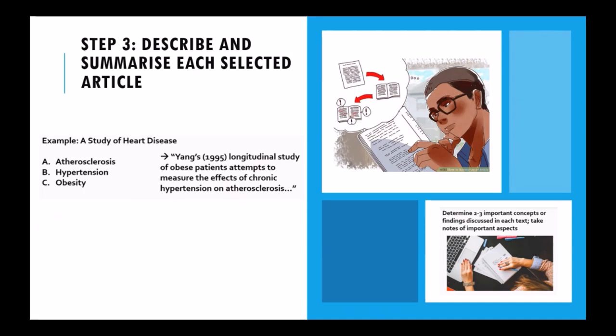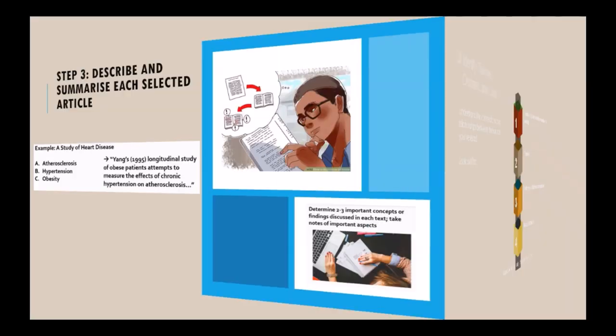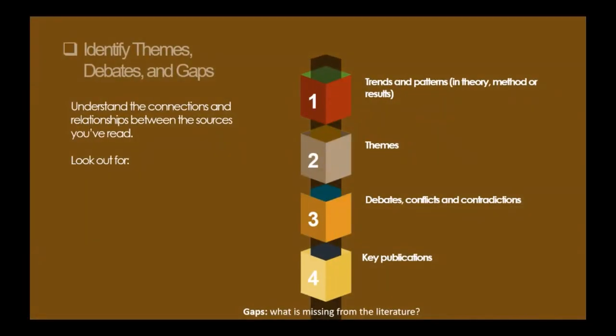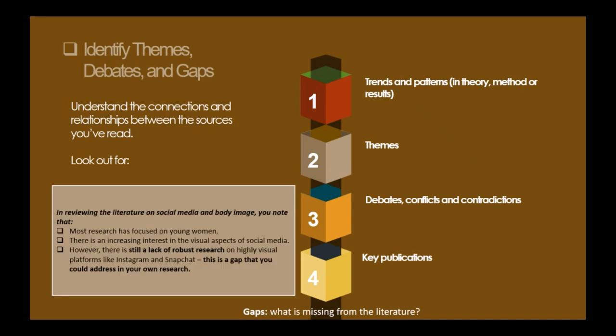Describe and summarize each selected section. Determine two or three important concepts or findings discussed in each text and take note of the most important aspects you have identified. Then identify the themes, debates, and gaps — to begin organizing your literature review's argument and structure, you need to understand the connections and relationships between the sources you have read.